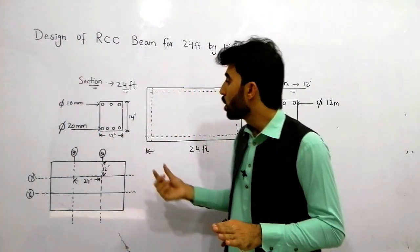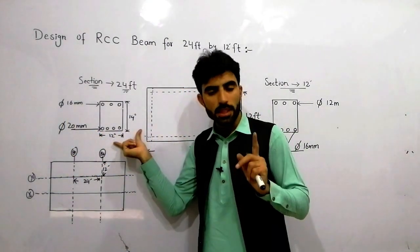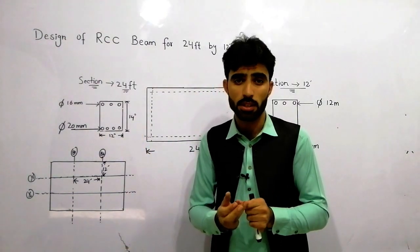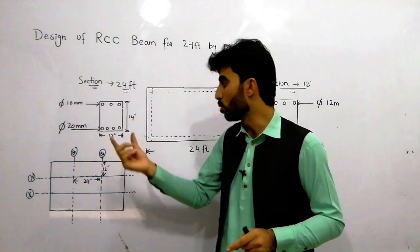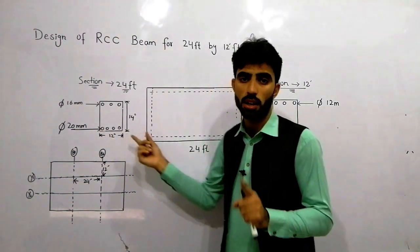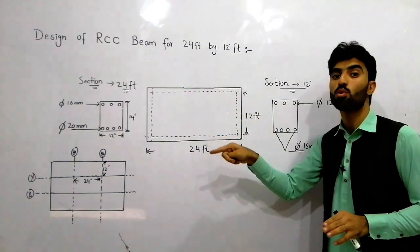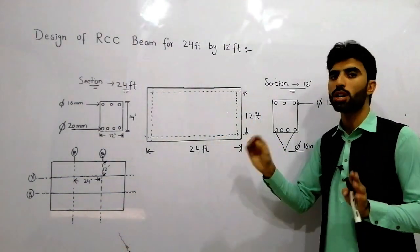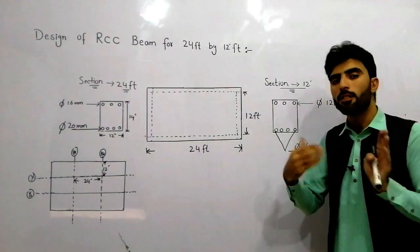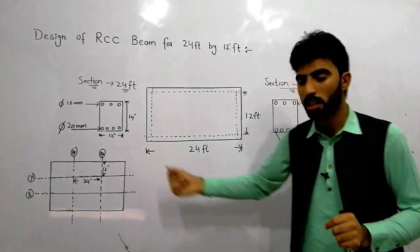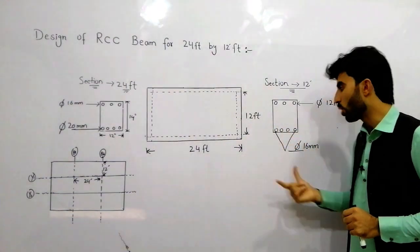Remember that you can use this beam design from 16 feet to 30 feet. You can use the same formula. Now we have the other section for 12 feet from that project and it was a 7-story building. We calculated all the loads. From that load we designed this beam for 24 feet and this beam for 12 feet.